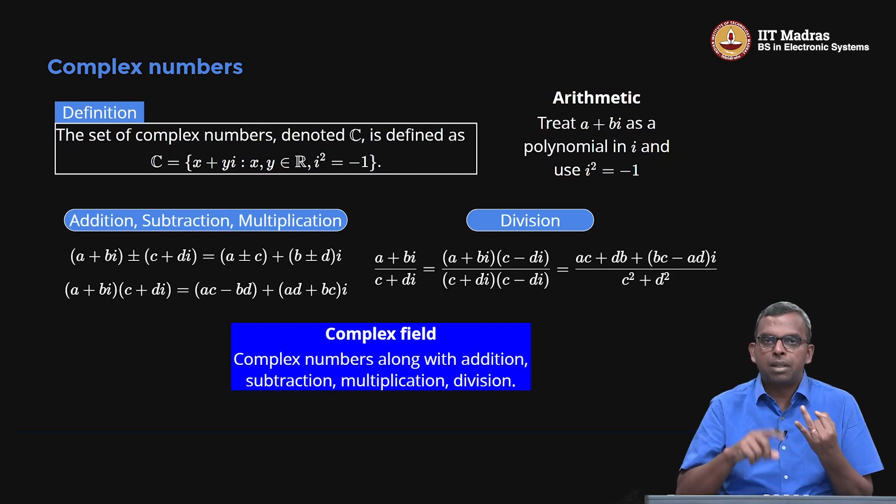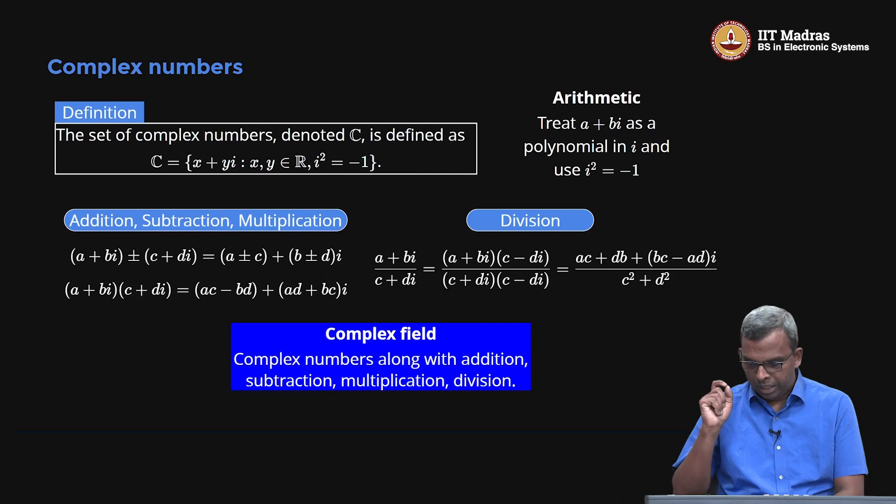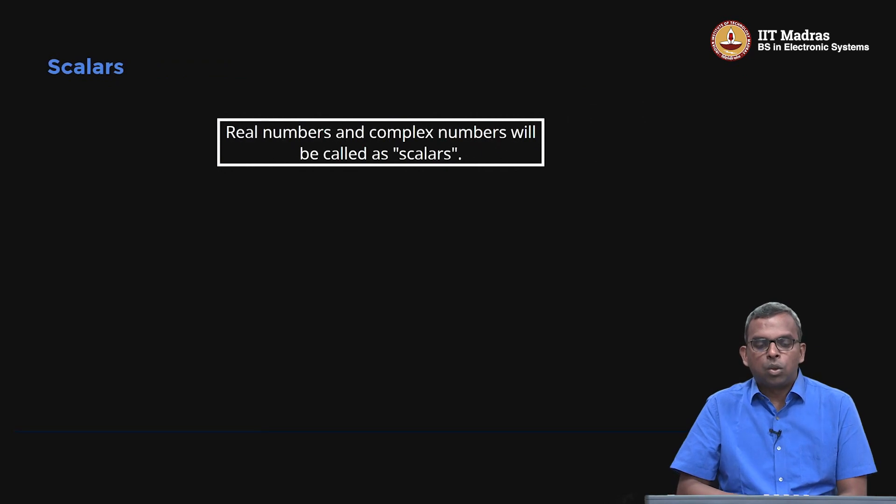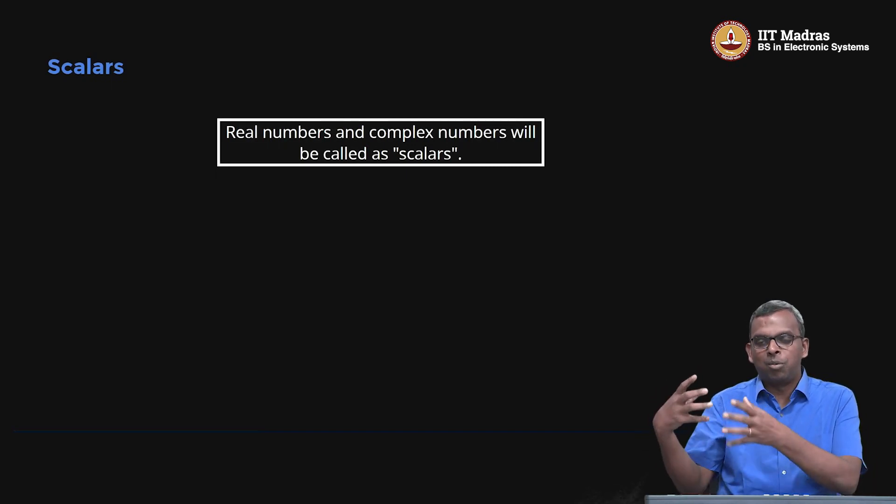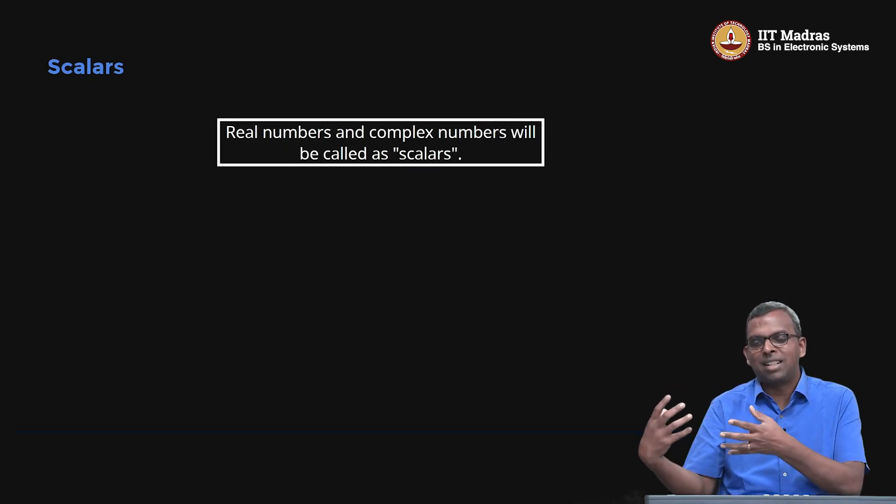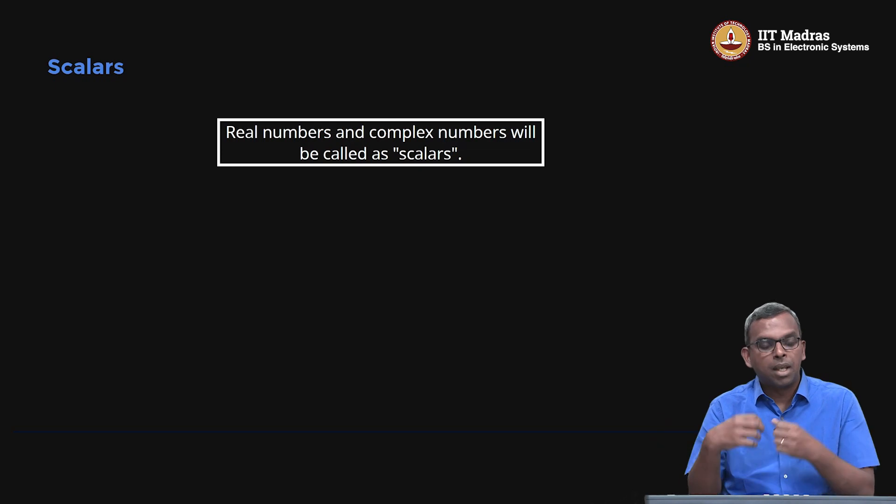Real numbers and complex numbers both form a field, and these two fields will be used a lot in this course. These numbers we'll refer to as scalars. Before you study vectors, which form vector space and are the crux of linear algebra, we have to look at what are scalars. Scalars are real numbers and complex numbers.